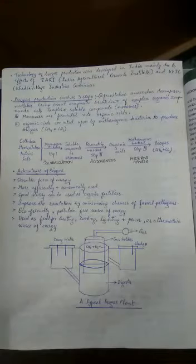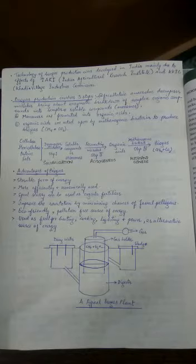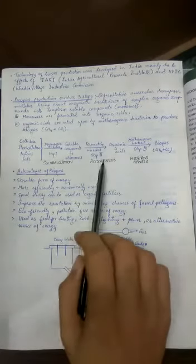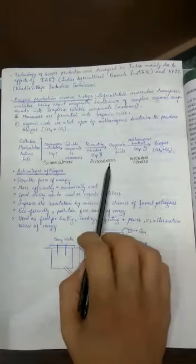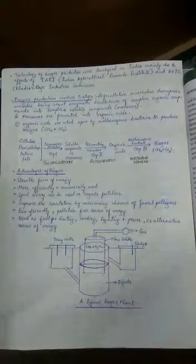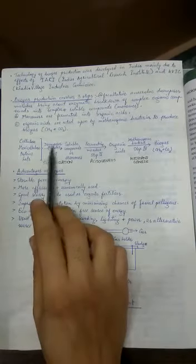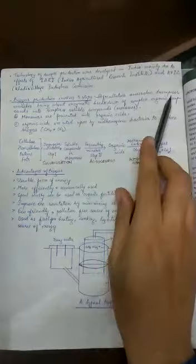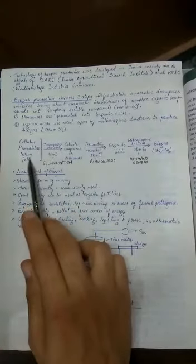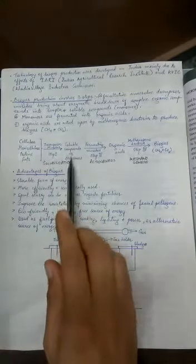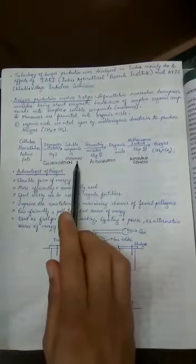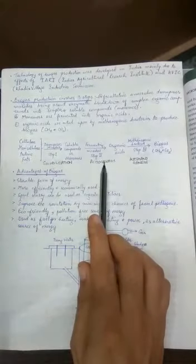The second step is that these monomers are fermented into organic acids. This step is called acidogenesis. The soluble compounds prepared by facultative anaerobic decomposing bacteria convert complex biomolecules into simple biomolecules or monomers. These monomers are then acted upon by another set of bacteria or microorganisms which cause fermentation.